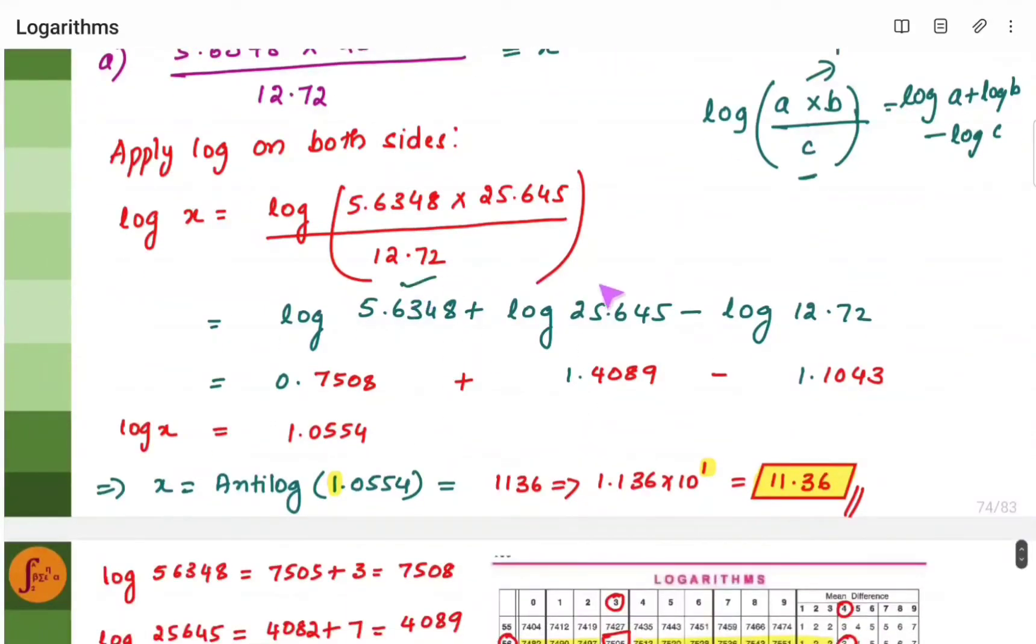So you get this. Now, separately find log of this, this, this. Let's do the simple calculations of the log values and we will get log x. x will become antilog of this. Find the antilog, you'll get 11.36. So this is the x value.